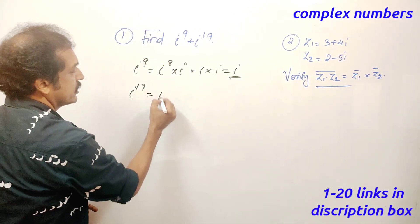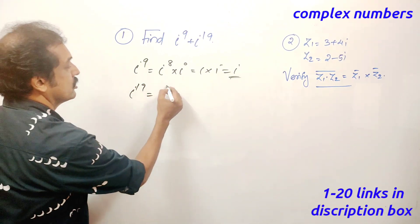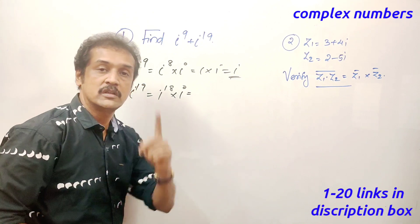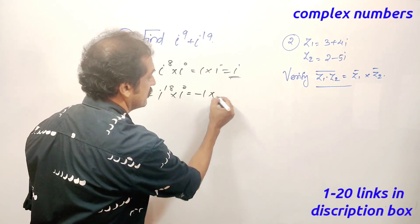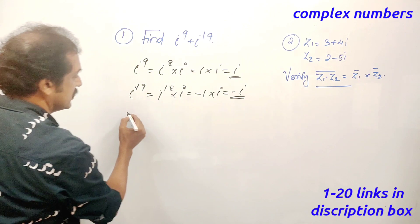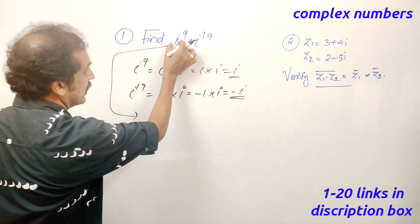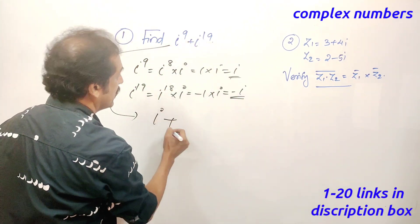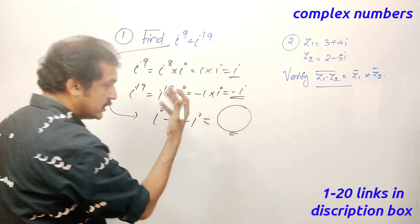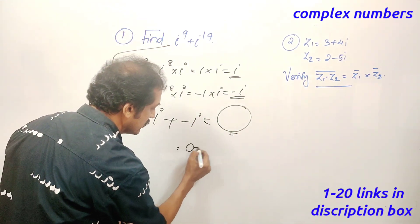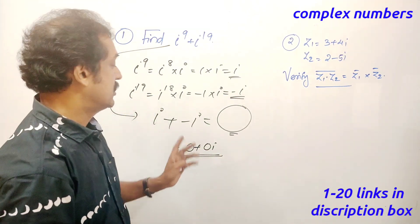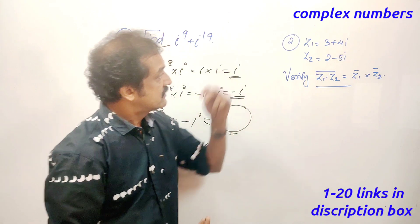Next, i raised to 19 equals i raised to 18 into i. The value of i raised to 18 is minus 1. That is minus 1 into i, which is minus i. Adding i raised to 9 plus i raised to 19 gives i plus minus i, and the answer is 0. The formula result is 0 plus 0i — real part and imaginary part are both zero.